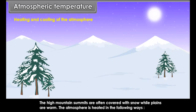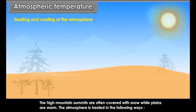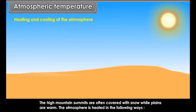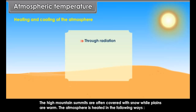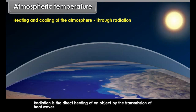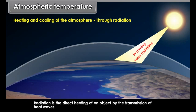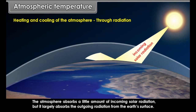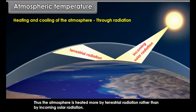The temperate zone lies between the Tropic of Cancer and Arctic Circle in the northern hemisphere and between the Tropic of Capricorn and Antarctic Circle in the southern hemisphere. In this zone, the sun's rays never fall vertically. This zone is neither too hot nor too cold. The frigid zone lies to the north of the Arctic Circle in the northern hemisphere and to the south of the Antarctic Circle in the southern hemisphere. Here, the sun's rays are very slanting. This zone receives very low amount of heat, hence this is a very cold part of the Earth.